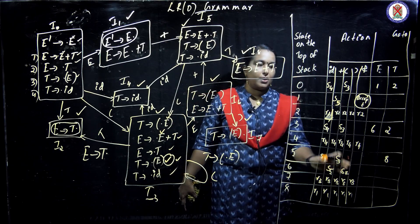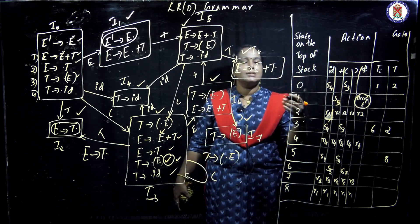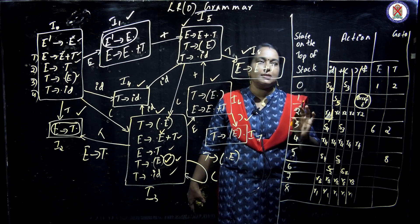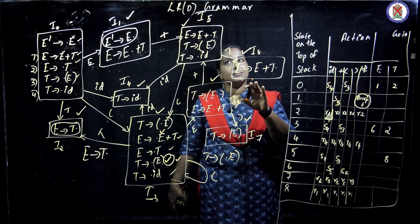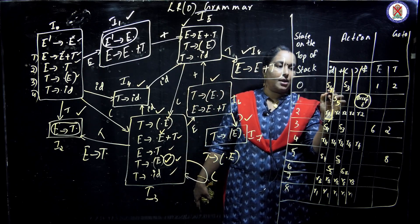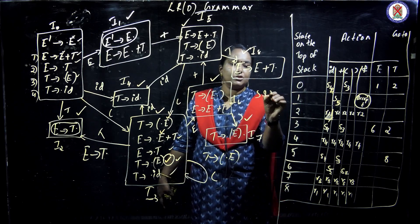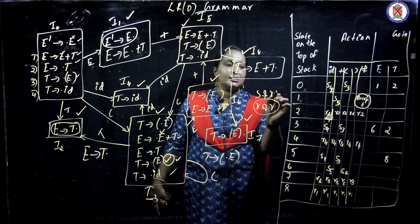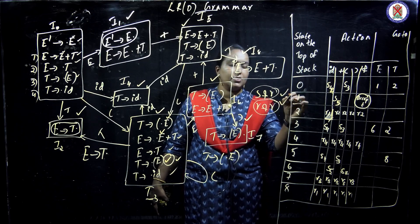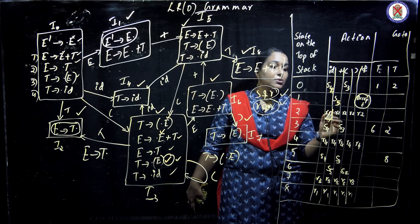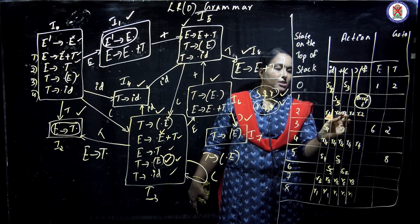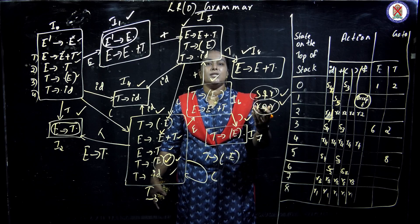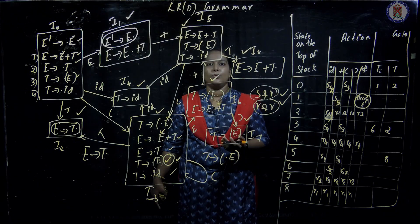This is an example of an LR(0) grammar. In LR(0), if in a single column both a shift and a reduction occur simultaneously, this is called a shift-reduce conflict, and the grammar is not LR(0). If two reductions occur simultaneously it is called a reduce-reduce conflict — also not LR(0). Since some grammars may cause these conflicts, we need more powerful parsers, which we will discuss in the next video.